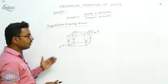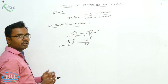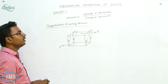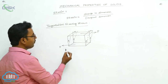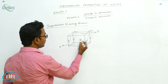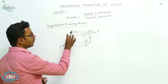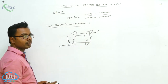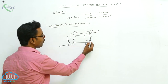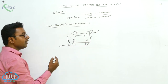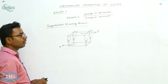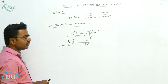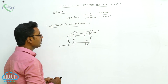We define tangential or shearing strain as the angle through which the top surface is turned due to the application of tangential stress. When we apply tangential stress to the cube, the top surface turns through an angle theta with respect to the bottom surface. This angle theta is called tangential or shearing strain.